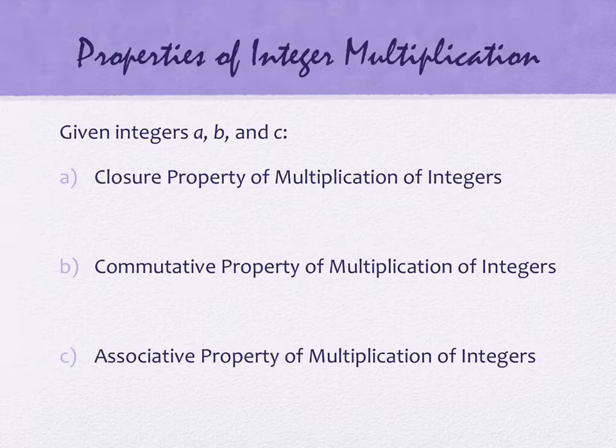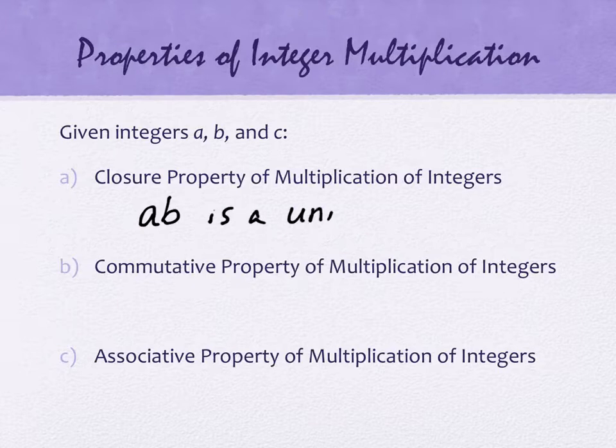Properties of multiplication. These are the same properties that we keep seeing over and over and over again. They never change. So properties of multiplication. What does the closure property say? Multiply two integers you get another integer. If you apply it to integers, if you multiply two integers, you get an integer. You cannot multiply two integers and get a fraction. So A times B is not only an integer, it is a unique integer.